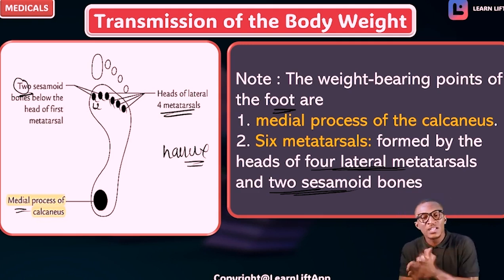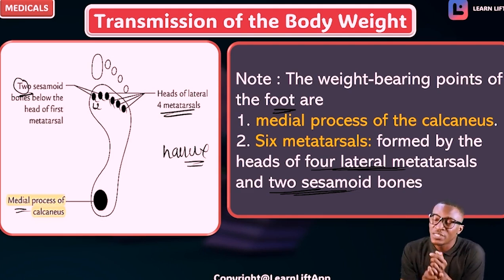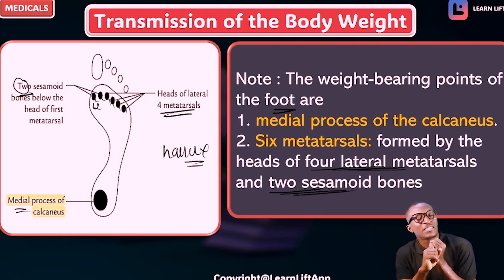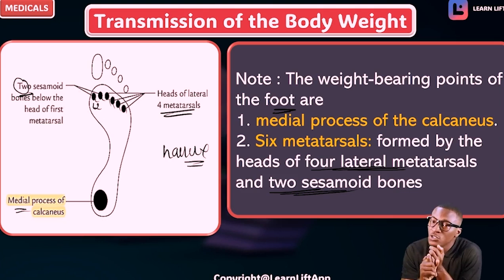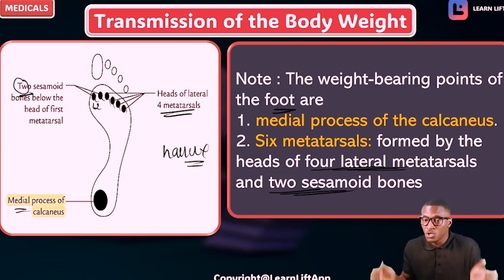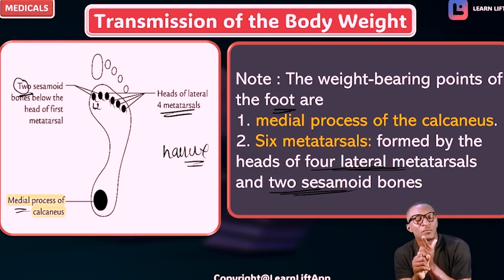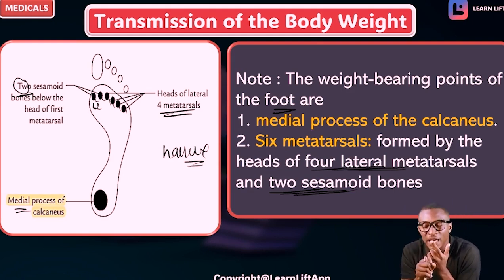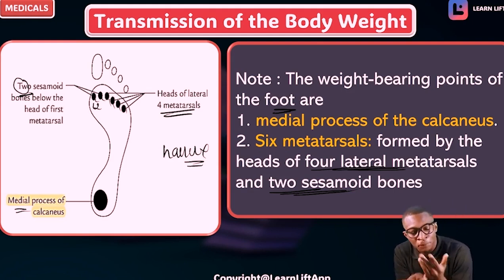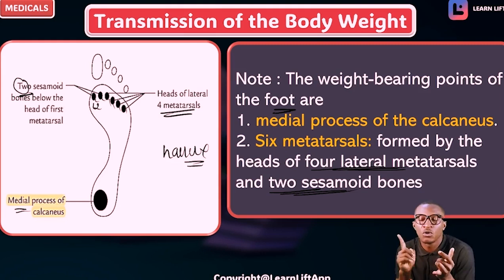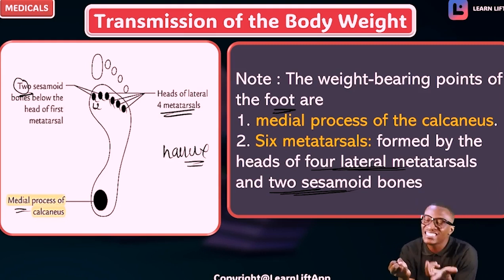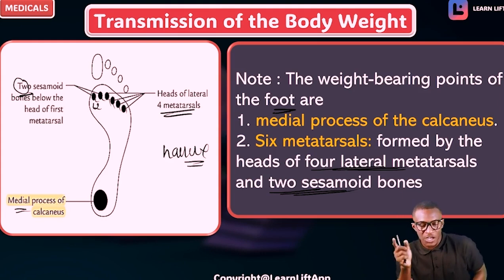To summarize weight distribution: starting from the vertebral column → sacroiliac joint → pelvic girdle → hip joint → femur → knee joint → tibia → calcaneus and the six metatarsal pillars. The fibula does not have attachment to the femur, so weight passes from the knee joint to the tibia. From the tibia it goes to the calcaneus and then spreads to the six metatarsal pillars.